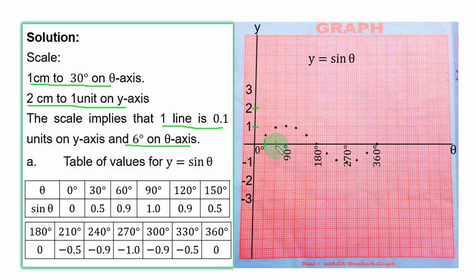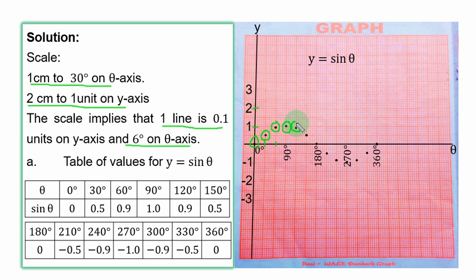Now we plot the values. When θ = 0°, y = 0, so you plot it at the origin. When θ = 30°, y = 0.5 — this is 30 on the axis and 0.5 for y. When θ = 60°, y = 0.9, very close to 1 — you plot it in this part. When θ = 90°, y = 1. When θ = 120°, y = 0.9. For 150°, y = 0.5.